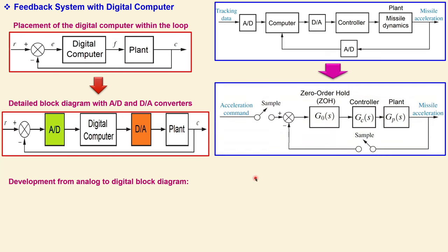For this problem, we would like to know the range of controller gain k such that the system is stable. In previous examples the system was already fixed; now k can change the situation and we need to know the minimum and maximum values we can use. The sampling period used in this example is one second. Let's look at the solution: the zero-order hold transfer function in the s-domain is (1 - e^(-sT))/s, and since T = 1 second, we simplify accordingly.